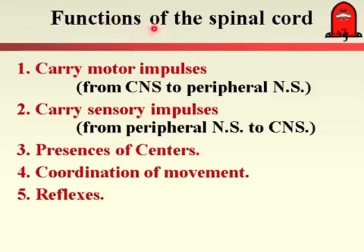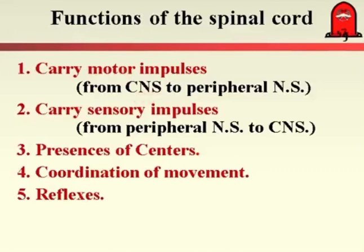The function of the spinal cord: the spinal cord represents a midway between the peripheral nervous system and the higher center — the brain, cerebellum, cerebrum, and basal ganglia. The spinal cord carries motor information and motor impulses from the higher center, from the central nervous system, to the peripheral nervous system. At the same time, it carries sensory impulses and sensory information from the periphery, from the receptors, to the central nervous system. So it represents a midway between the peripheral and central nervous system, carrying both motor and sensory information.